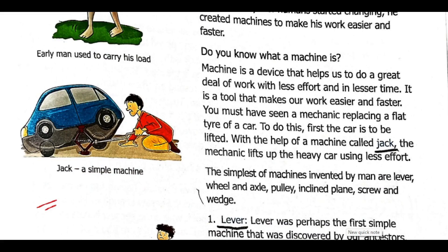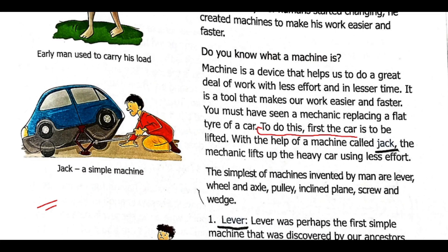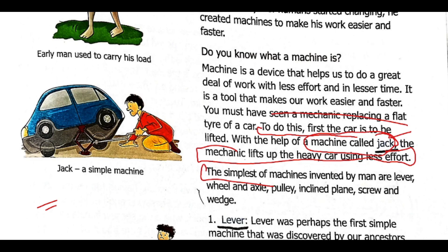We have an example here. If you will see a car mechanic when the car replaces the tire — it cannot be removed easily because the car is very heavy, so the car is picked up using a tool or machine called a jack. After that the tire is removed. The machine helps the mechanic effortlessly remove and replace the tire. So machines simplify work.